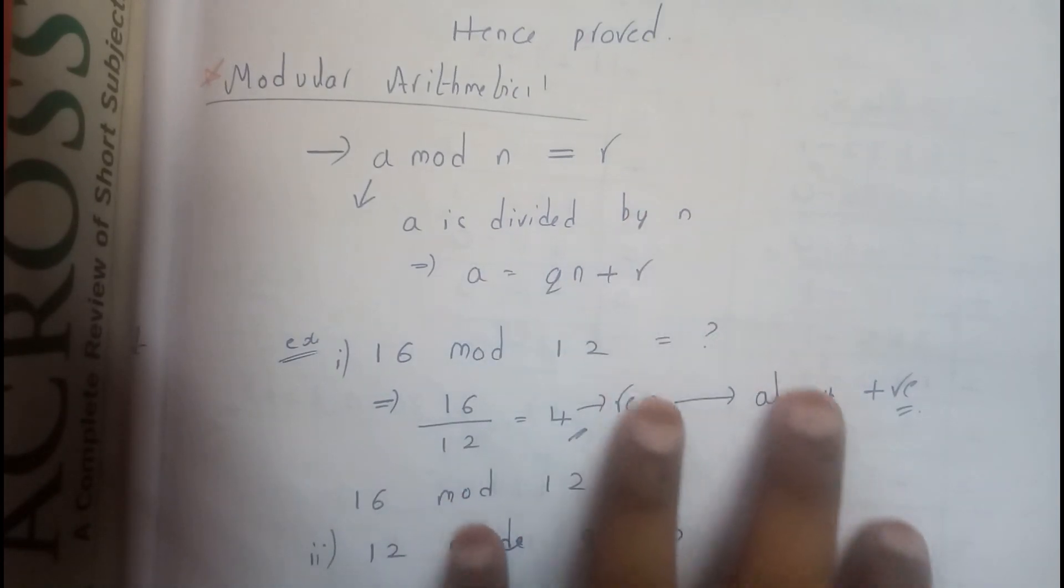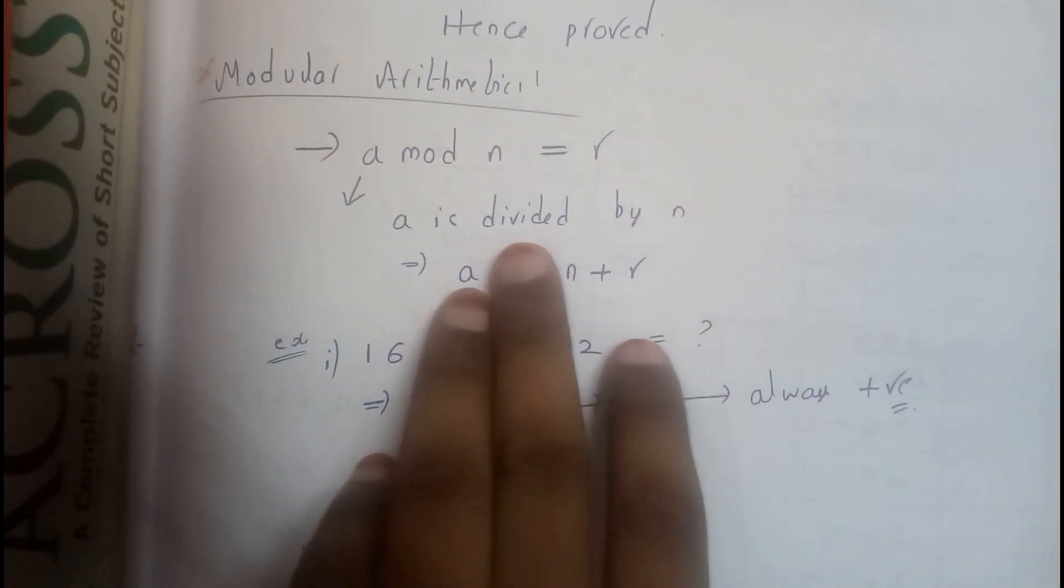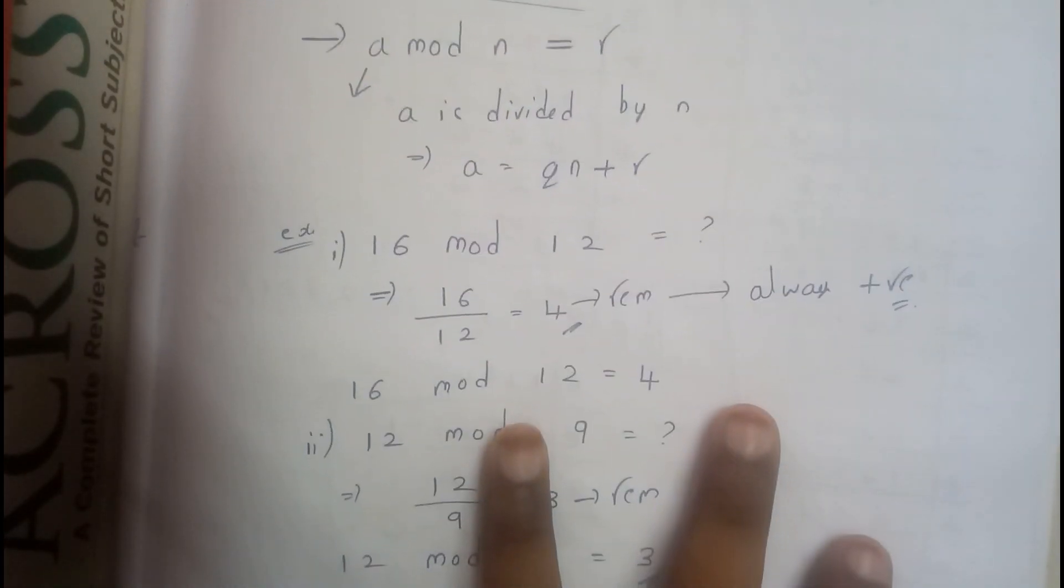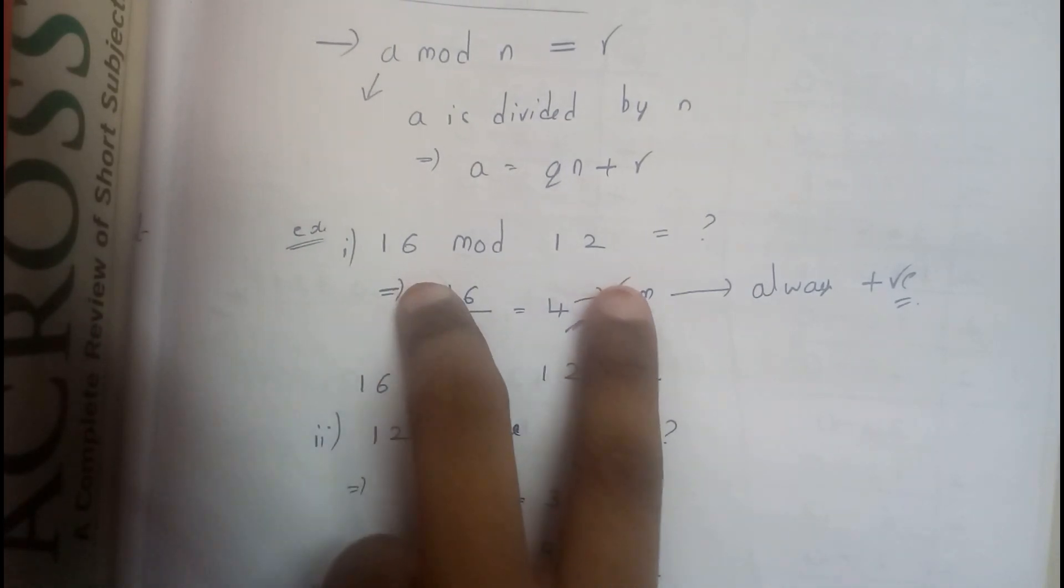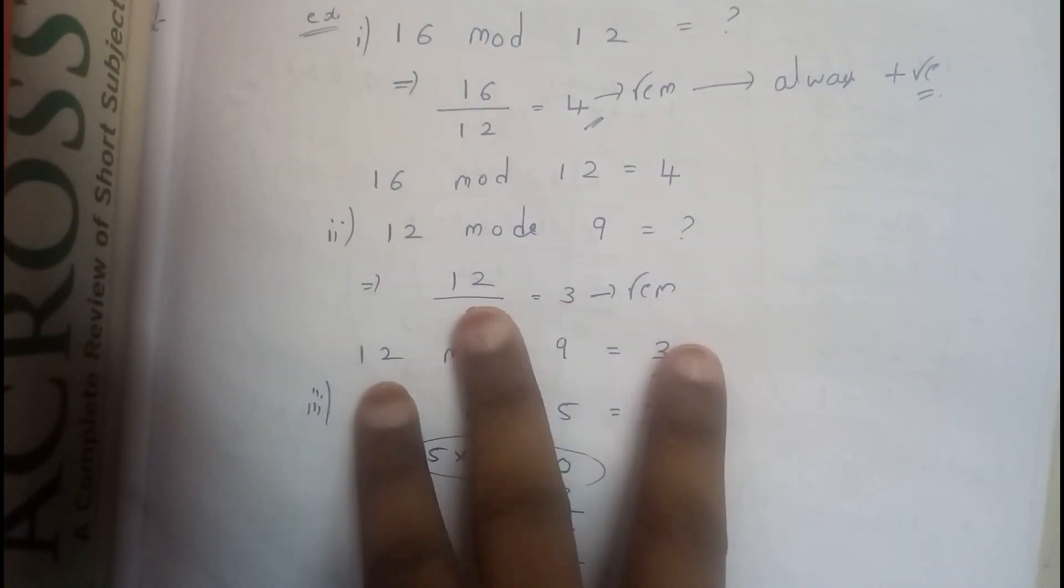A equals q n plus r. So there is nothing to do. 16 mod 12 means you'll just be writing the remainder. So 12 ones are 12, 16 minus 12 which equals 4. Similarly, 9 ones are 9, 12 minus 9 is 3.